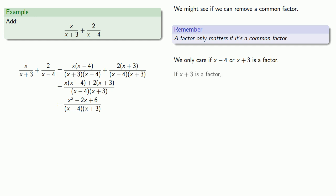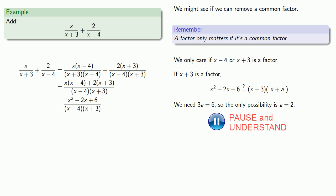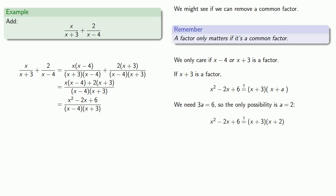We might also see if x plus 3 is a factor — if we can write x squared minus 2x plus 6 as x plus 3 times something. In this case, we need 3a to be 6, so the only possibility is a equal to 2. But we still don't know if we actually have that factorization, so let's check: is this really x plus 3 times x plus 2? If we expand the right-hand side, we see that this is not the correct factorization, so we can't factor this way either.